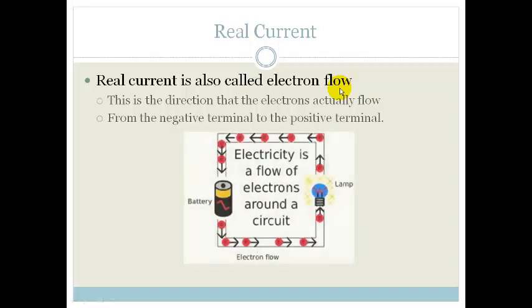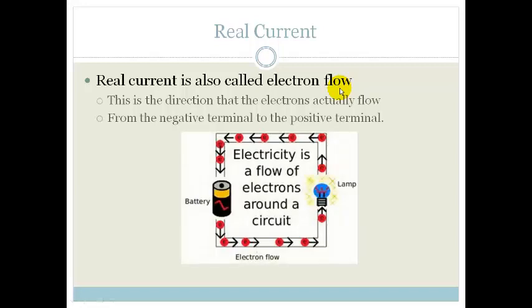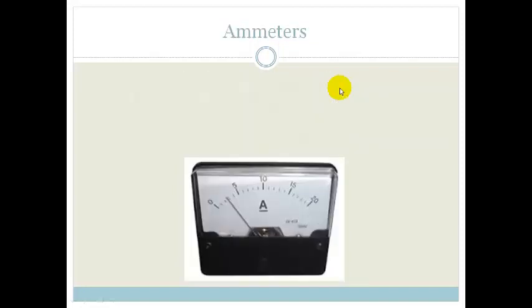Electricity is the flow of electrons around the circuit. It always flows from the negative terminal. The electrons flow from the negative terminal to the positive terminal because the positive terminal attracts the negative electrons. But by convention, we say it travels from the positive to the negative.